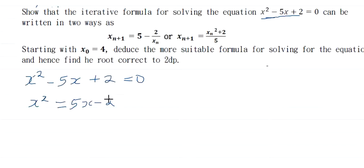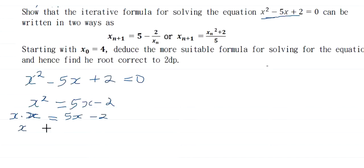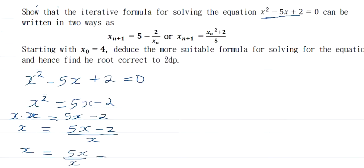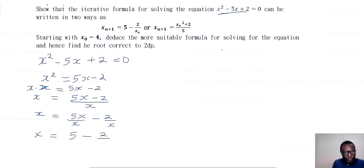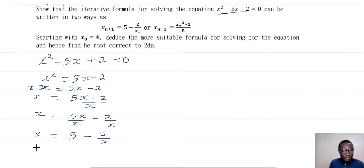Dividing both sides by x — since x² = x·x — we get x = (5x − 2)/x. Distributing the numerator gives x = 5 − 2/x. This x on the left becomes the better approximation, so the first iterative formula is: xₙ₊₁ = 5 − 2/xₙ, where n = 0, 1, 2, 3, ...